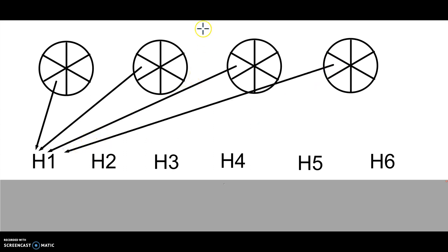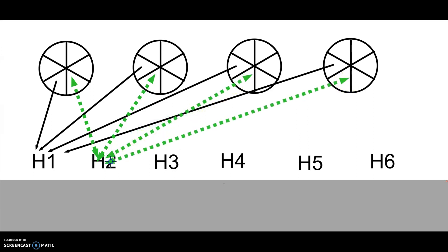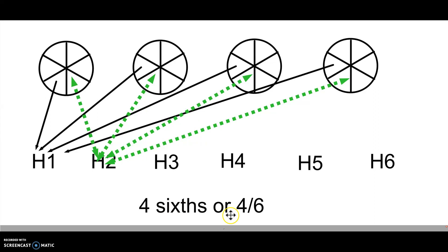I can do this for each hiker. Hiker 2 will get one of the six from each of the pounds. So how much trail mix will each hiker get? Four of the sixths — written as a fraction, four-sixths.